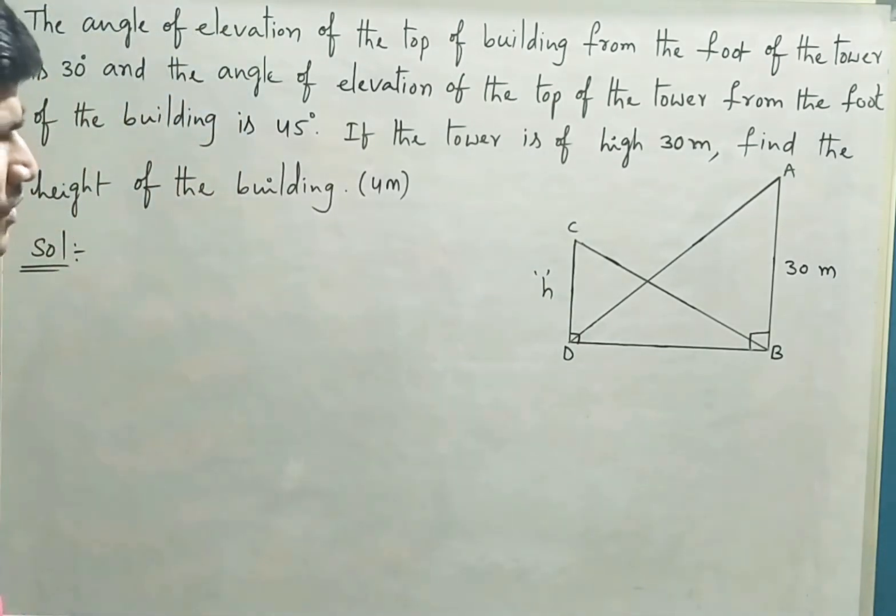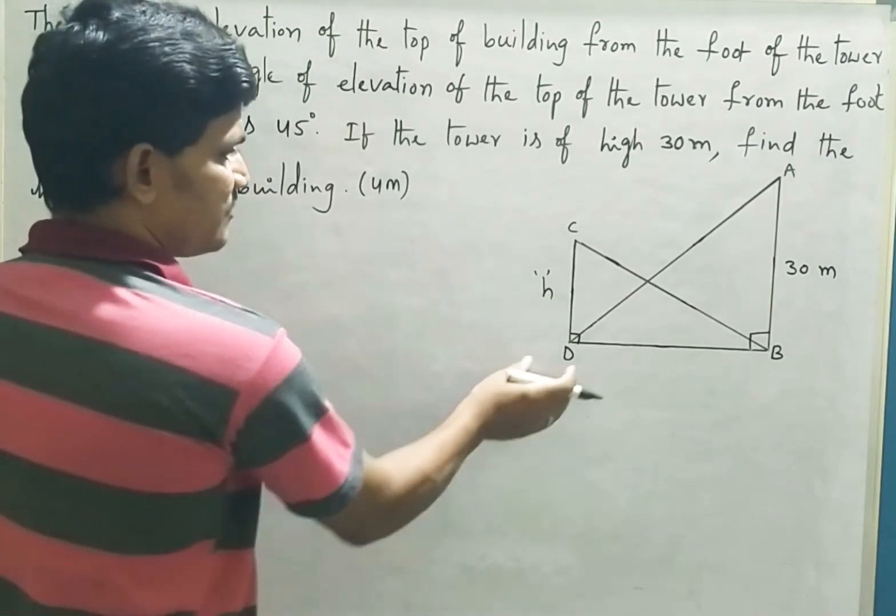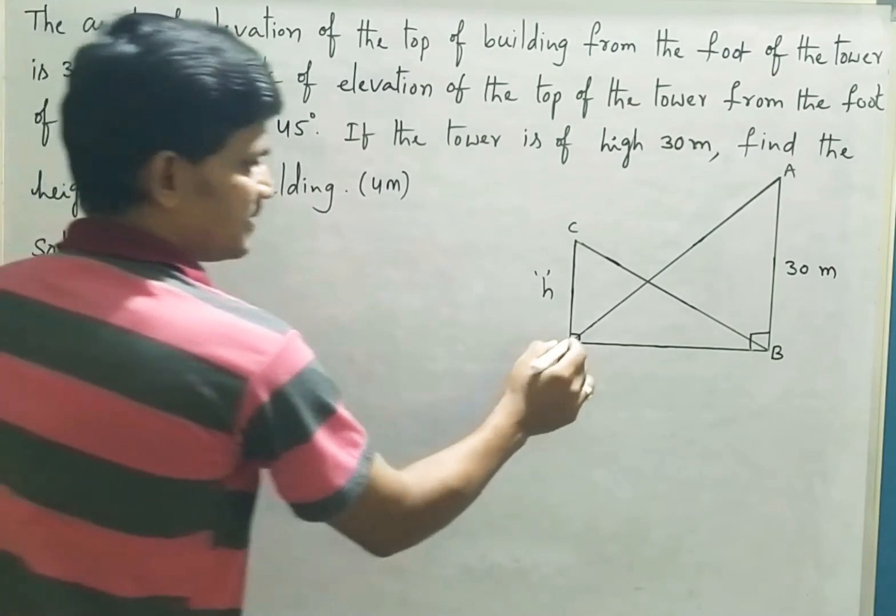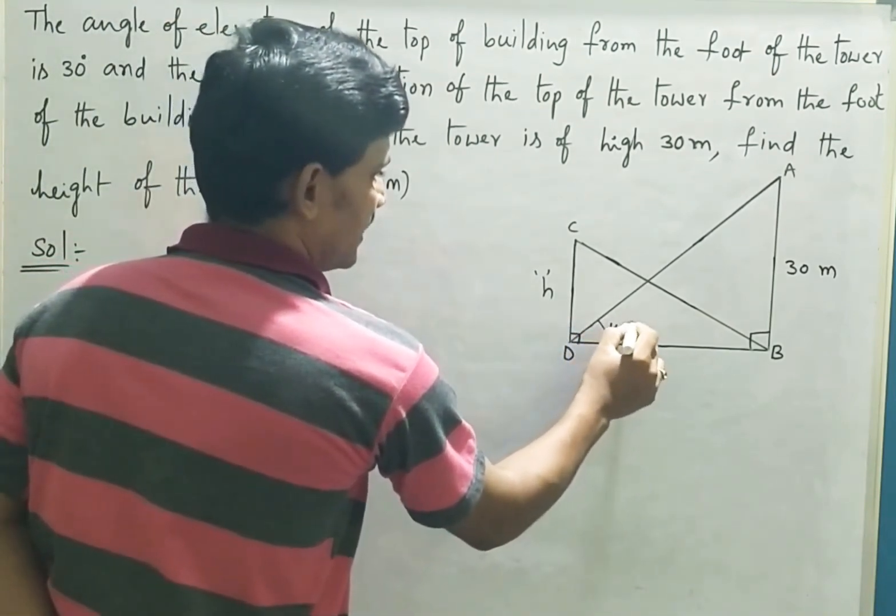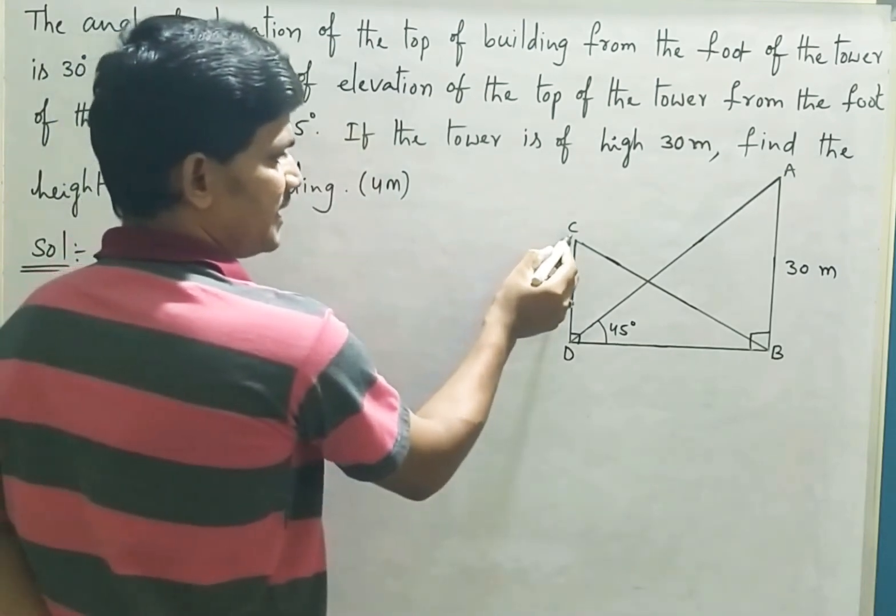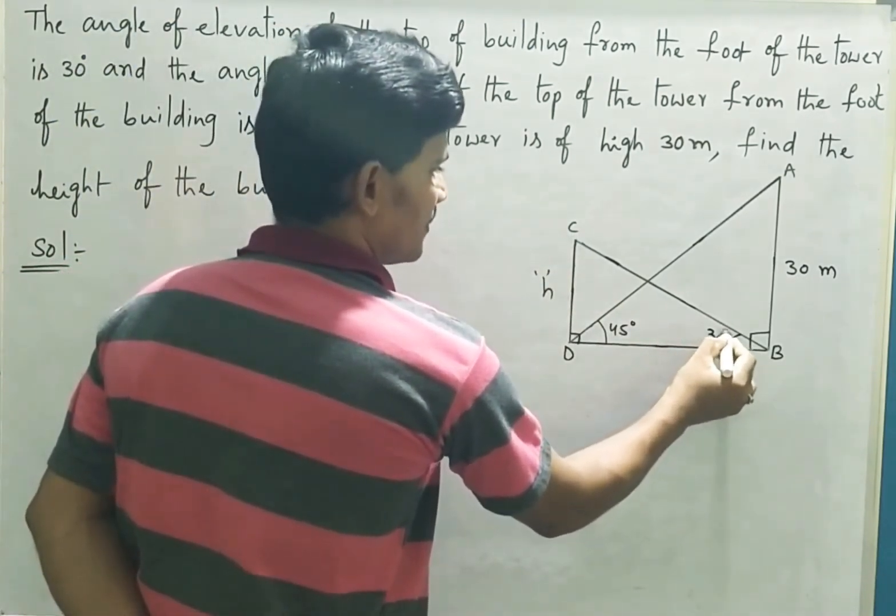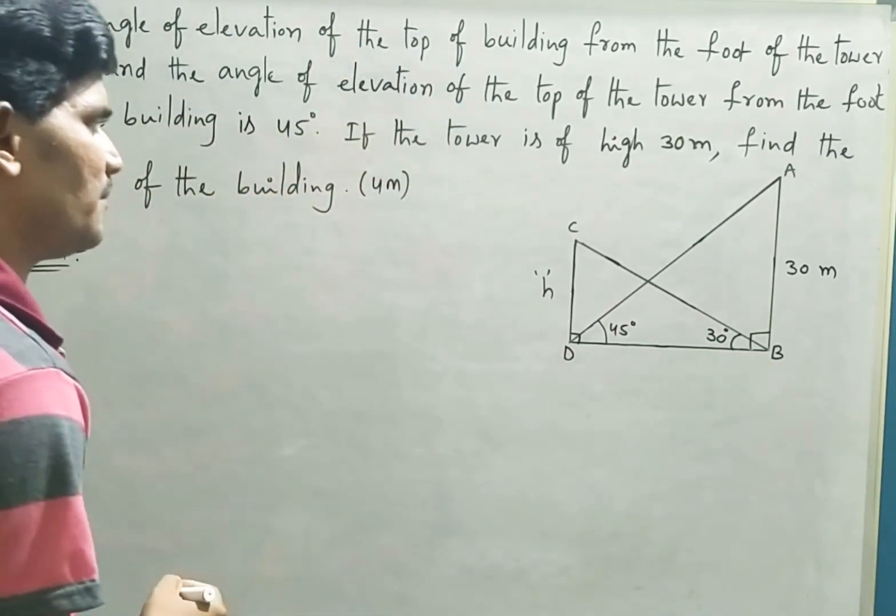Now one more clue is the angles of elevation are given. When you see the top of the tower from the foot of the building, the angle of elevation is 45 degrees, and the top of the building is making an angle of elevation of 30 degrees from the foot of the tower. So these are the clues given in the problem.